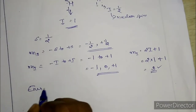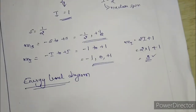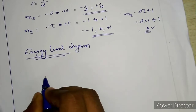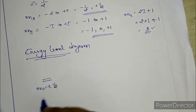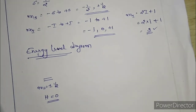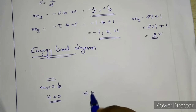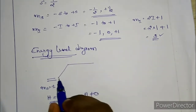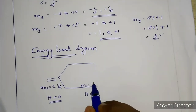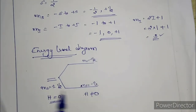Now let's look at the energy level diagram. In the last class we saw the energy level diagram for hydrogen. We have one electron for which ms = −1/2 and +1/2. In the absence of a magnetic field (H = 0), both ms values are degenerate. But when a magnetic field is applied (H ≠ 0), the ms levels split — ms = −1/2 and ms = +1/2 become distinct levels.